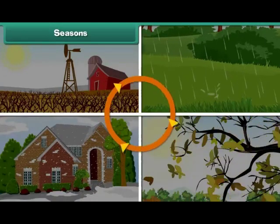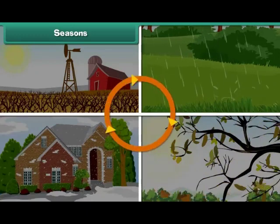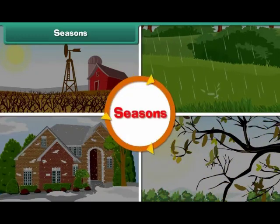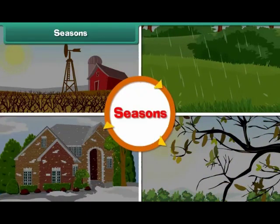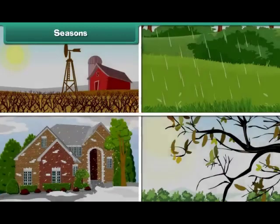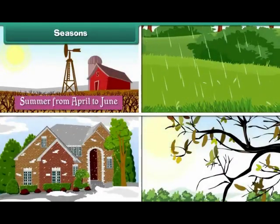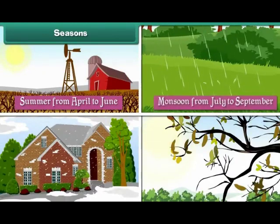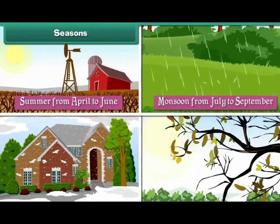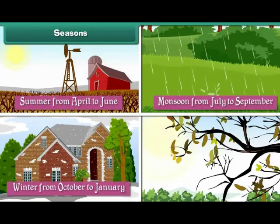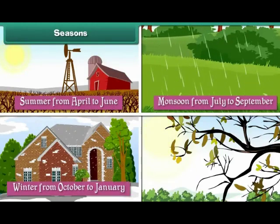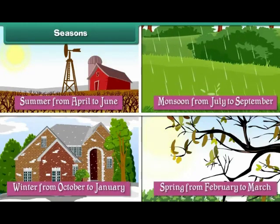The weather changes in cycles and these cycles are called seasons. There are four main seasons in a year. They are summer from April to June, monsoon from July to September, winter from October to January, and spring from February to March.